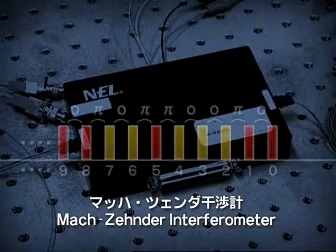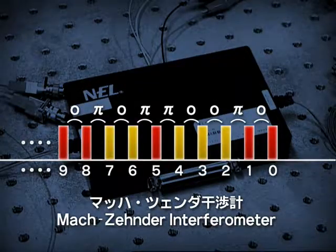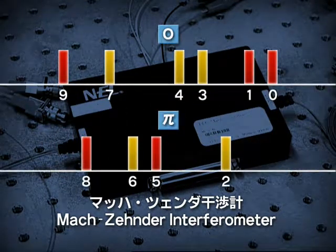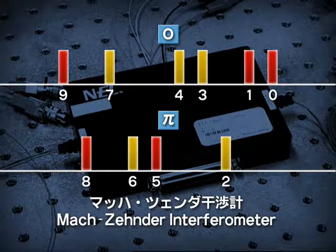This interferometer sends output to photon detector zero if the phase difference is zero, and to photon detector one if the phase difference is pi.